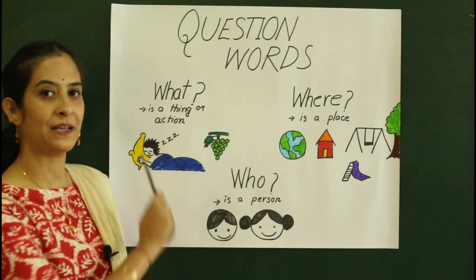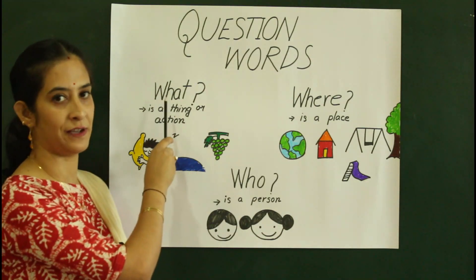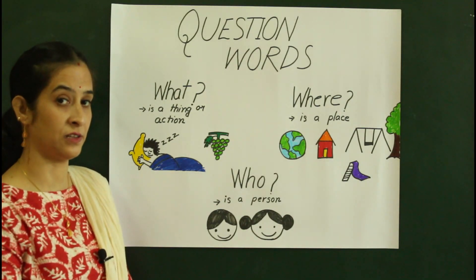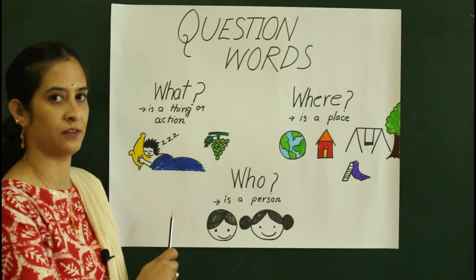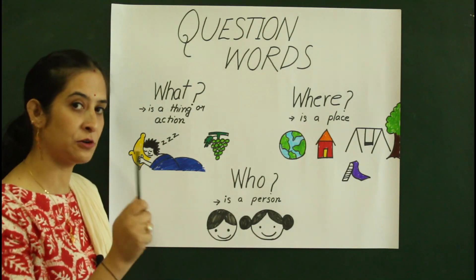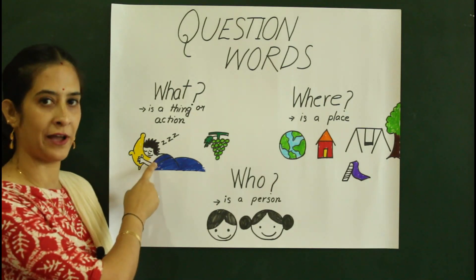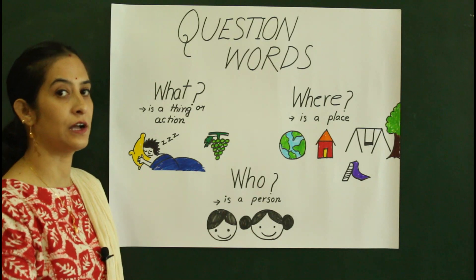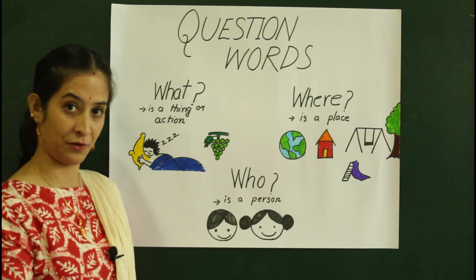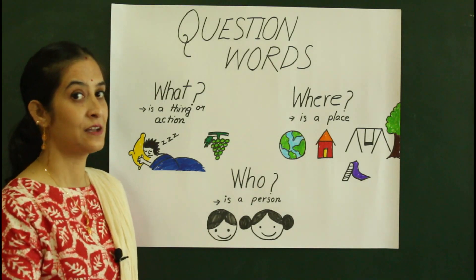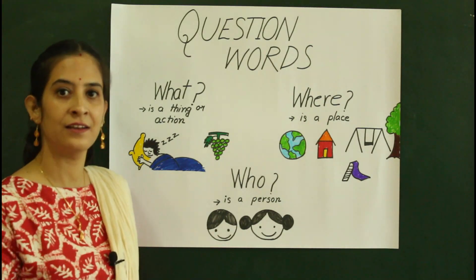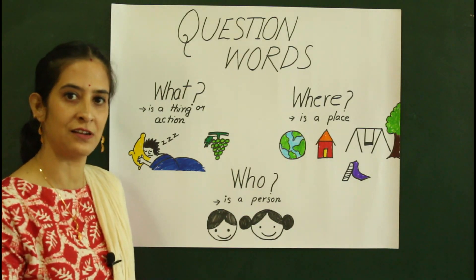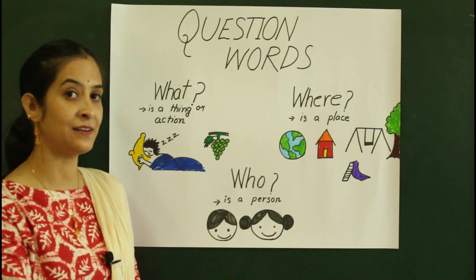I have drawn a few pictures. The first question word is 'what.' When the question 'what' is there in a question, it should be related to an action or a thing. Like, what is ma'am holding? Ma'am is holding a pencil. What is this boy doing? The boy is sleeping. So if there is any action or a question about anything, we have to use 'what.' What are you eating? What are you doing? It's an action. So when there is an action or a thing, which question word do we use? What.